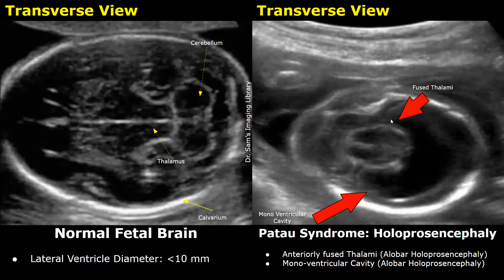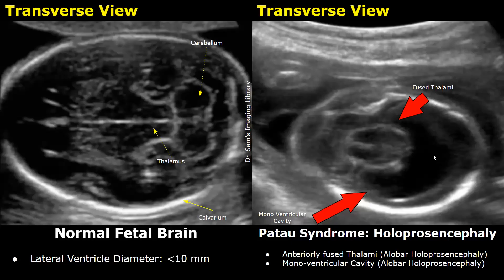On ultrasound, a normal fetal brain appears like this. This hyperechoic line is the falx cerebri, and these hypoechoic structures on either side of the falx are thalami. But in alobar holoprosencephaly, many brain structures are absent, and we will find fused thalami — anteriorly fused thalami — and a monoventricular cavity. A large, fluid-filled, C-shaped anechoic structure is present instead of normal brain tissue and normal lateral ventricles. This is a monoventricular cavity, and it is seen in holoprosencephaly.